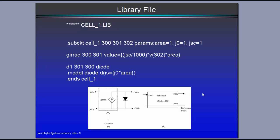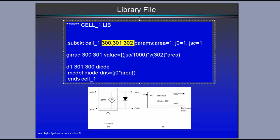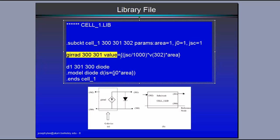Now we're going to discuss the P-SPICE simulation. This P-SPICE model has a voltage controlled current source due to the generation of electron-hole pairs, called GERAD, and a diode. We have three nodes: node 300, node 301, and node 302, defined from the schematic diagram. The parameters are: area set to 1, J0 initial current set to 1, and short circuit current set to 1. We have this voltage controlled current source defined accordingly.